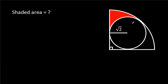In this video, we have been given a circle inside a quarter circle and the radius of the circle is square root of 2, and we have to find the shaded area.